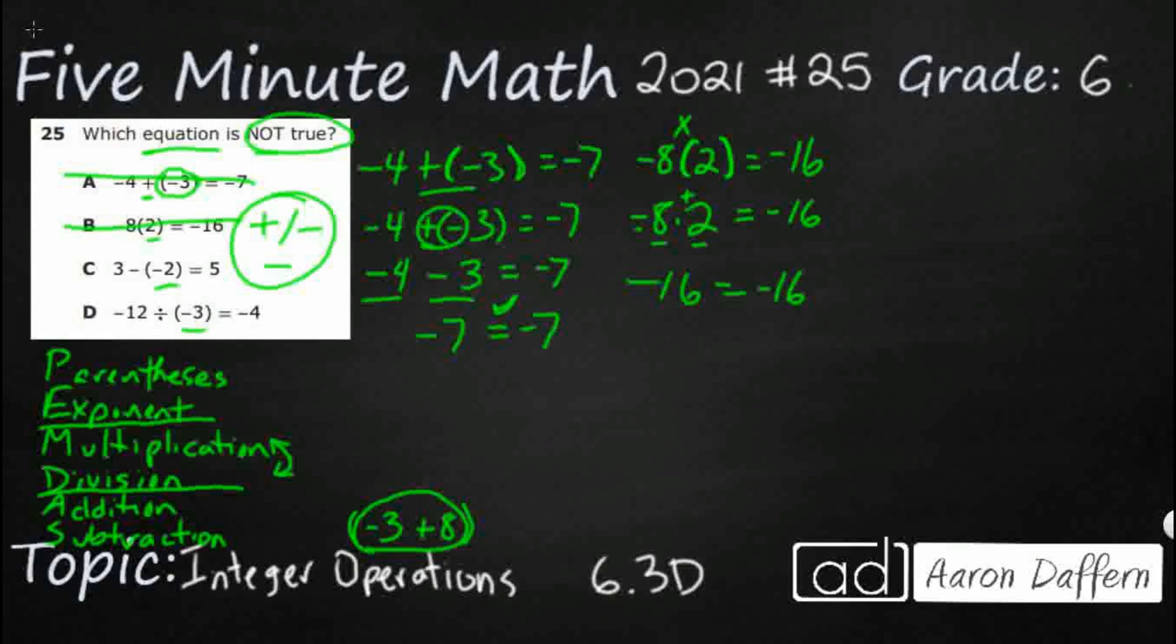Let's look at C. 3 minus negative 2 equals 5. And this is why we have the parentheses here. Minus minus 2 doesn't really work. So this is simply a subtraction here. But if a plus and a minus makes a minus, a minus and a minus actually makes a plus. That's the weird thing.